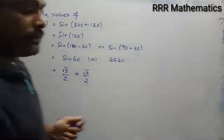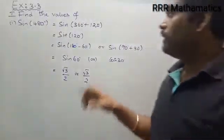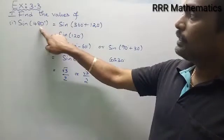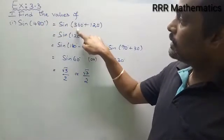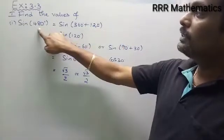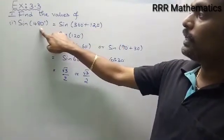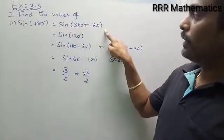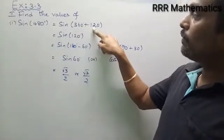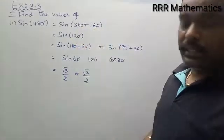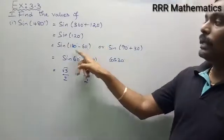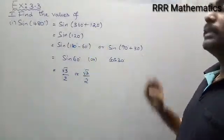So we have sin 480 degree. We write 480 degree as 360 plus 120 — dividing by 360, it gives 1 times 360 plus remainder 120. The multiple of 360 is considered as 0, so this becomes 120 degree. Finally we get sine 120 degree, which can be written as sin(180 minus 60) or sin(90 plus 30).